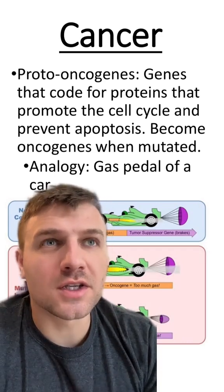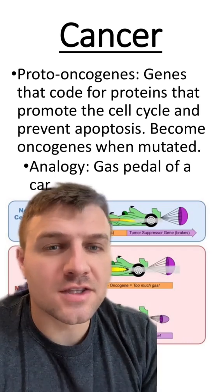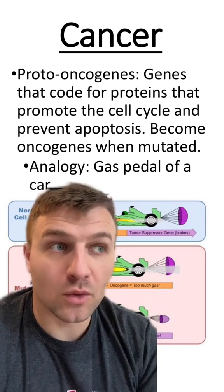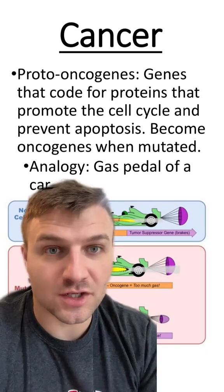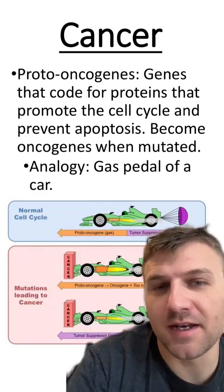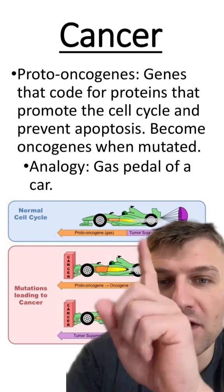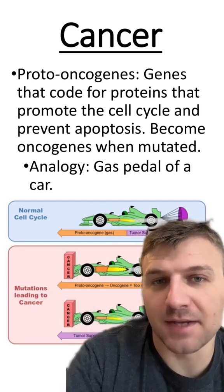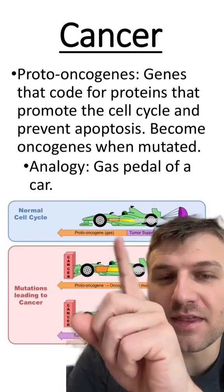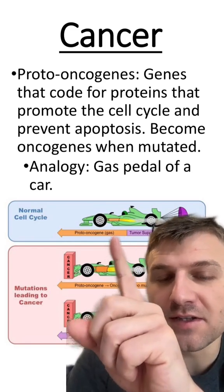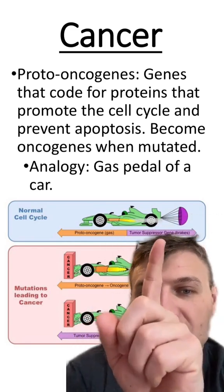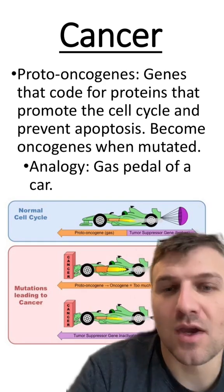Proto-oncogenes are genes that code for proteins that will promote the cell cycle or cell division. I always like to use the analogy of a car: oncogenes are like the gas pedal, and tumor suppressor genes are like the brakes.